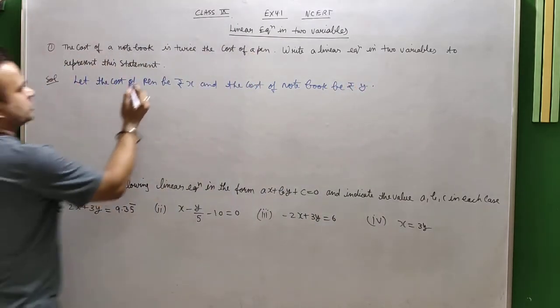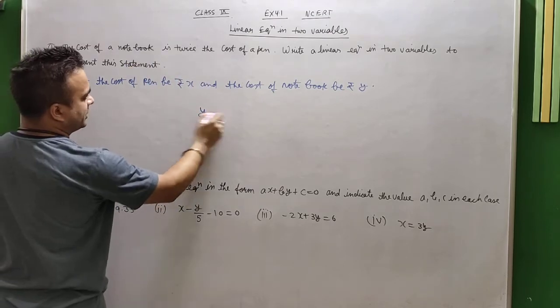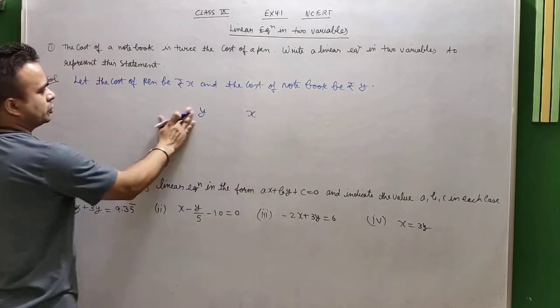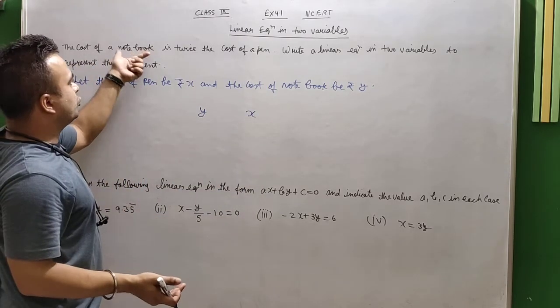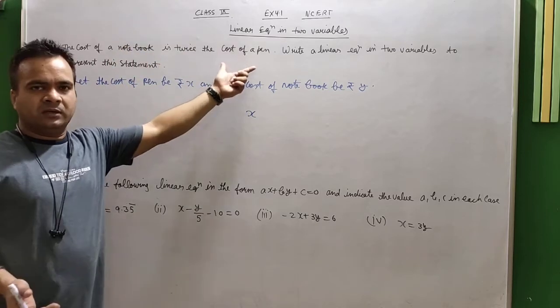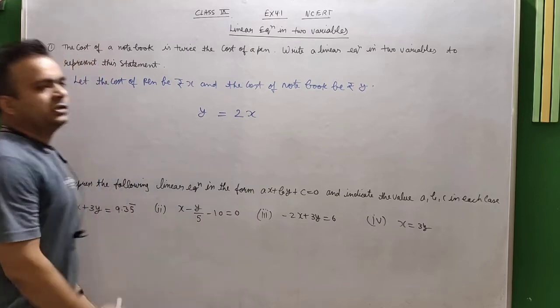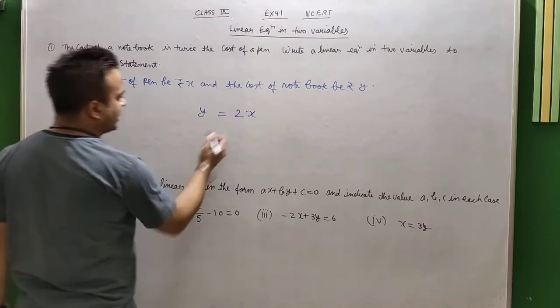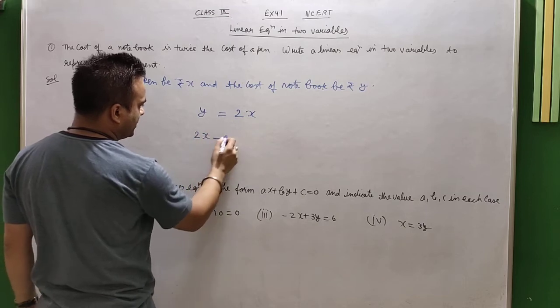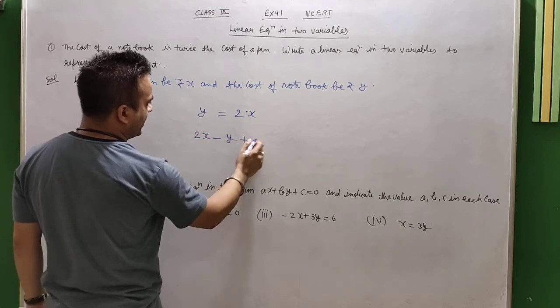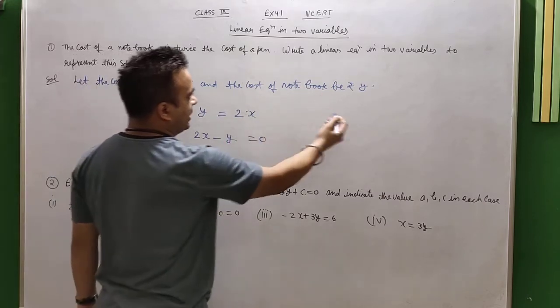You can read it. After that, you will have a simple relation: the cost of the notebook is twice the pen. So it means that y's cost is 2 times x. So if we can write the equation, it will be y equals 2x.